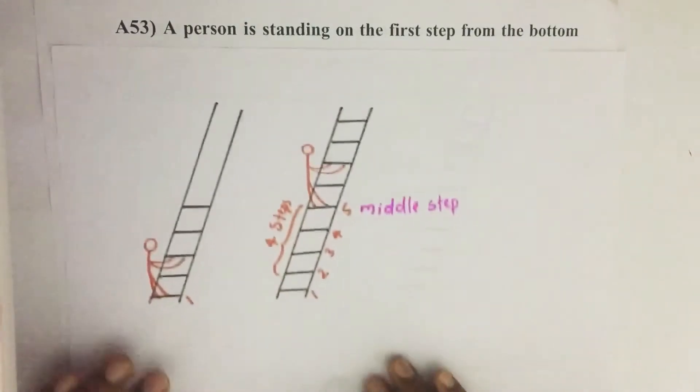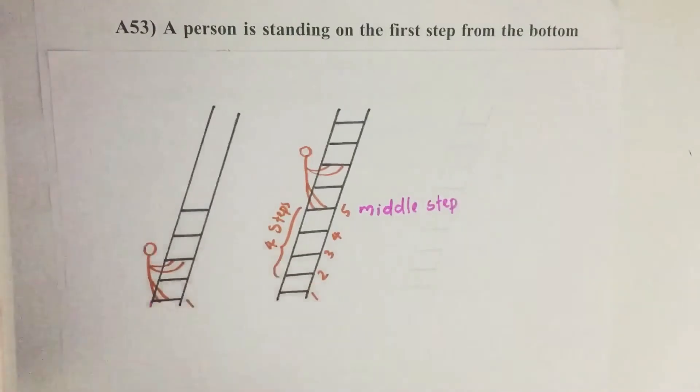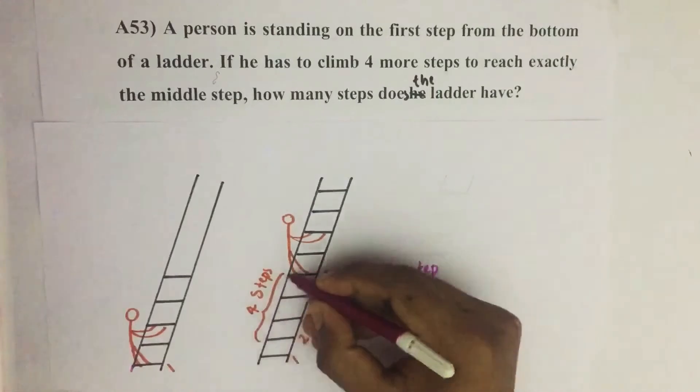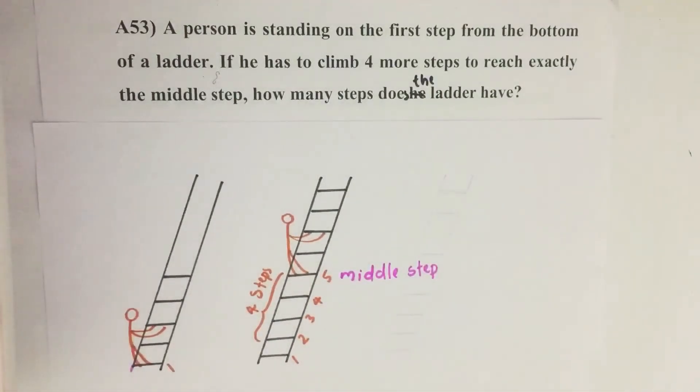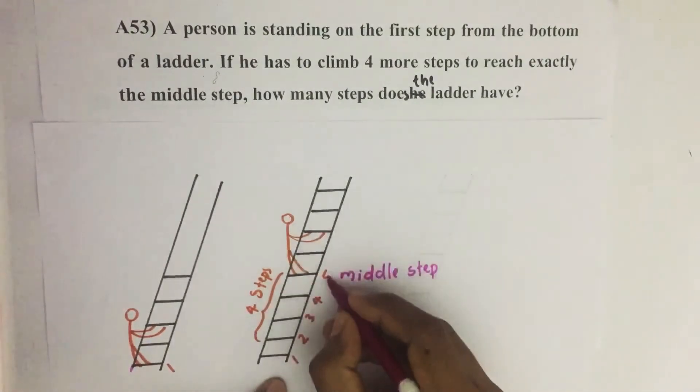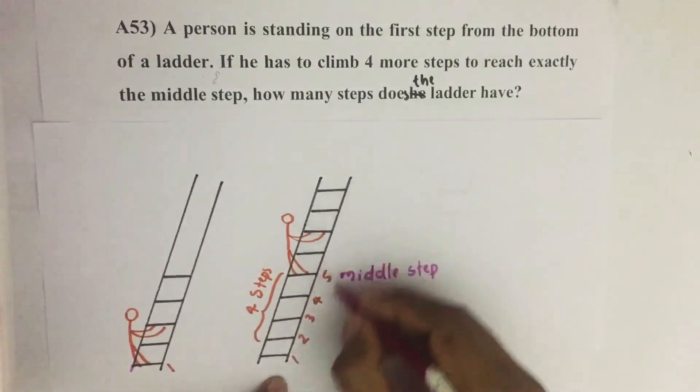So here a person is standing on the first step of a ladder. Then he climbs four more steps and reaches the middle step. That means now he is standing on the fifth step. Then what is the total number of steps?